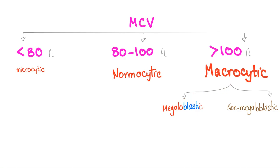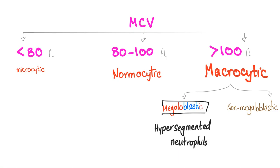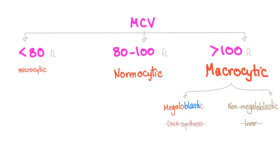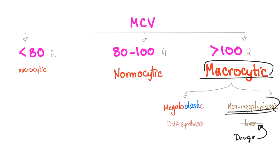Macrocytic anemia is divided into megaloblastic and non-megaloblastic. The megaloblastic anemia will have hypersegmented neutrophils, but non-megaloblastic anemia does not. The problem in megaloblastic macrocytic anemia is in DNA synthesis, usually due to B12 deficiency or folate deficiency. Non-megaloblastic? Your liver is toast — it could be a problem in the liver itself, or medications damaging your liver, causing non-megaloblastic macrocytic anemia. These do not have hypersegmented neutrophils.